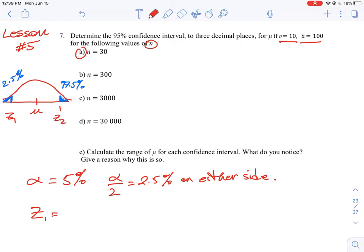We can simply calculate the z-score by using the inverse norm function on our scientific calculator. So we're going to do the inverse norm of 0.025 and that is going to be equal to negative 1.95996.